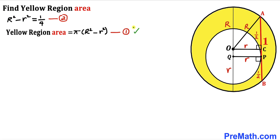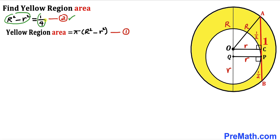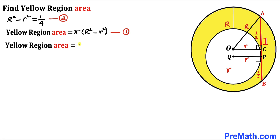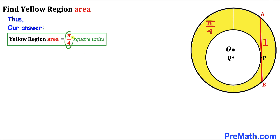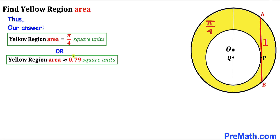Now combining equations one and two: the yellow region area is π(R² − r²), and from equation two, R² − r² = 1/4. Substituting, the yellow region area equals π × (1/4) = π/4. Therefore, the yellow shaded region area is π/4 square units, which is approximately 0.79 square units.